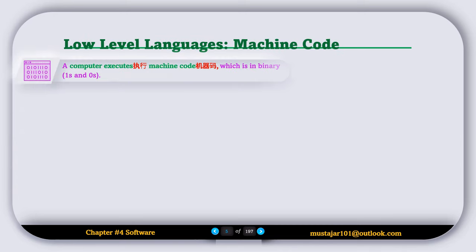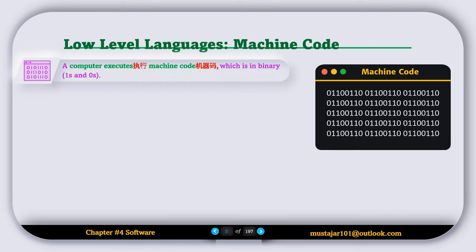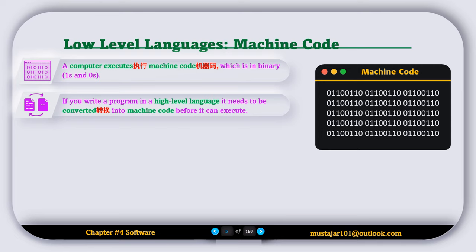Now let's discuss about the machine code. A computer executes machine code which is in binary. If you write a program in a high-level language, it needs to be converted into machine code before it can execute.